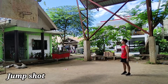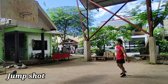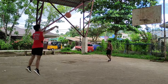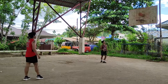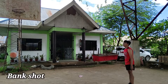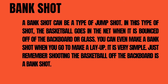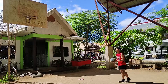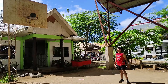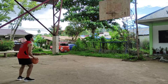The second type is a jump shot. A jump shot is another basic shot to make in basketball. You jump and while jumping, you shoot the ball hoping to make it. The third type is a bank shot. A bank shot can be a type of jump shot. In this type of shot, the basketball goes in the net when it is bounced off the backboard or glass.